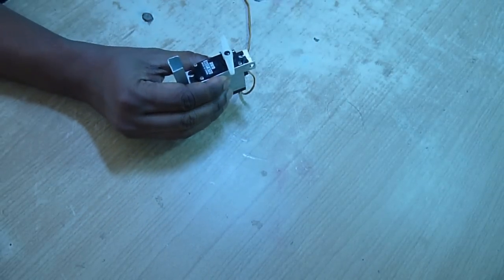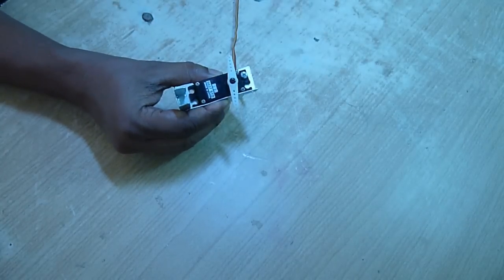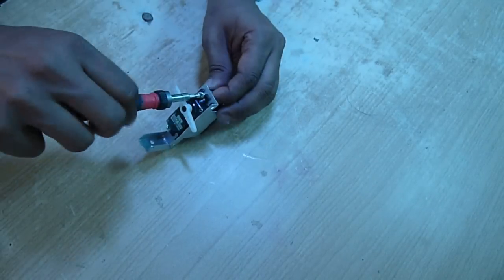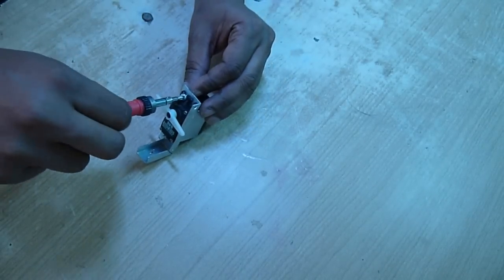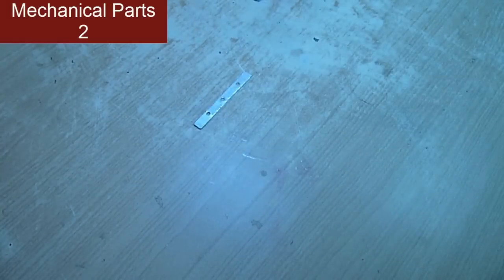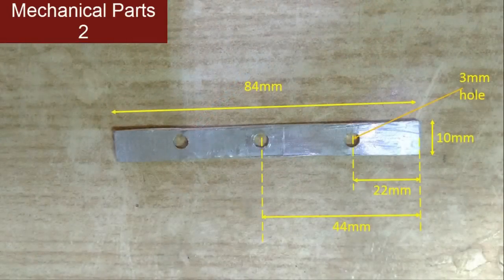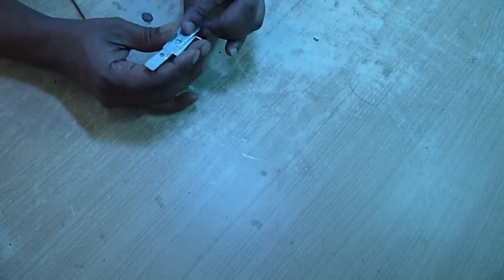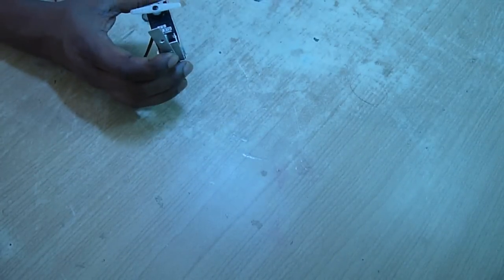The second part is this. The dimension is here. This is for the forehead. At the center of part one, fix it with a screw.